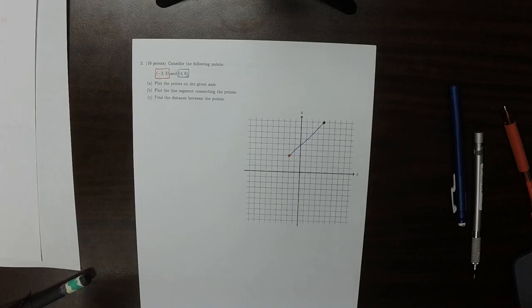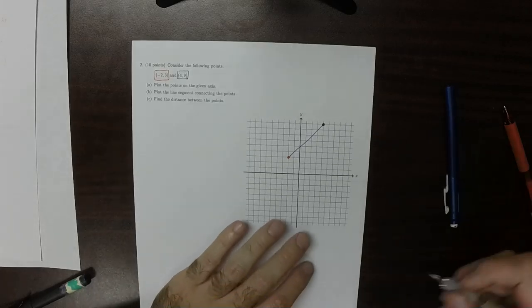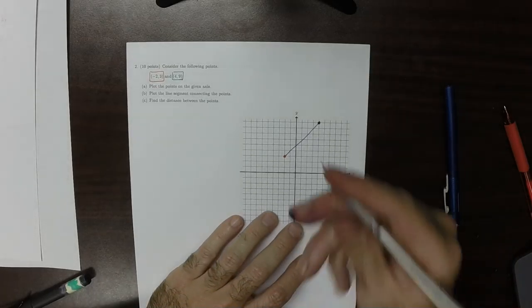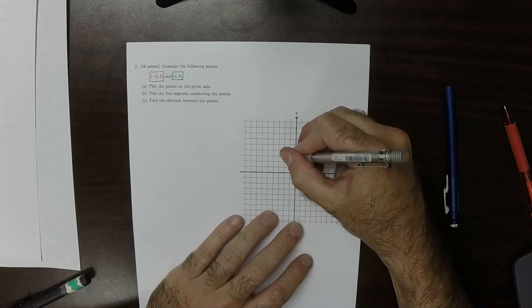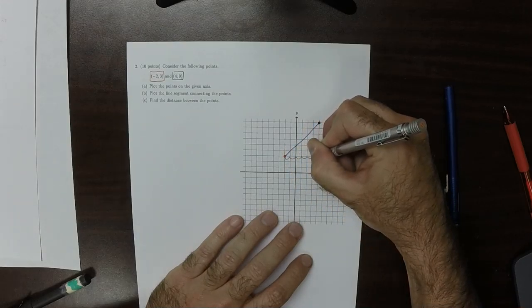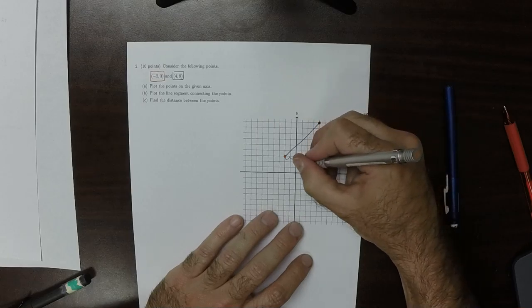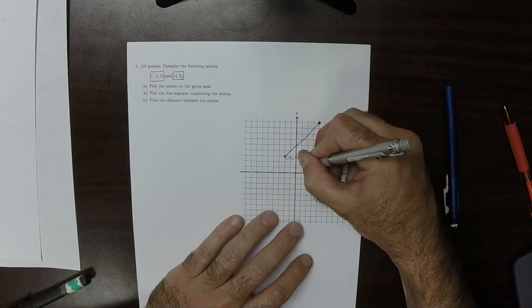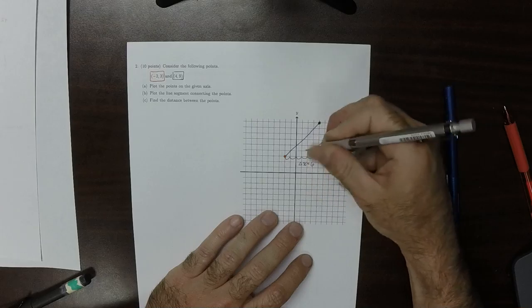Well, this can be done in a variety of ways. So one way to do this is sort of just by counting. So that'd be 1, 2, 3, 4, 5, 6.